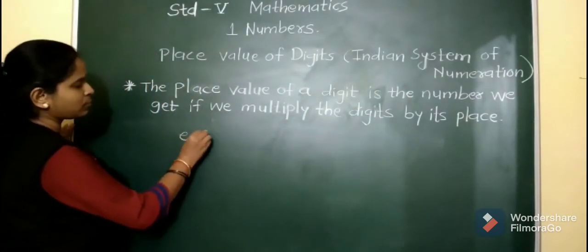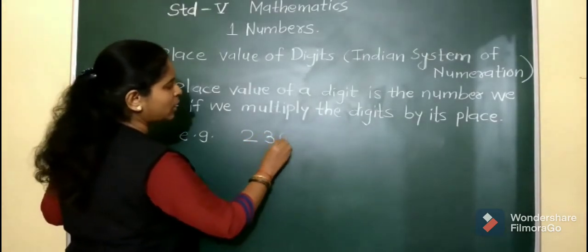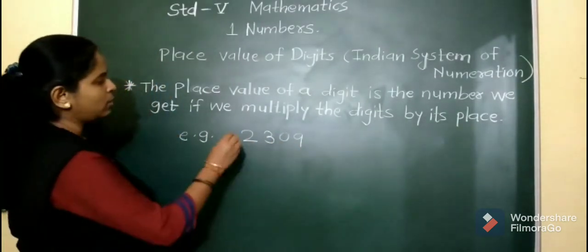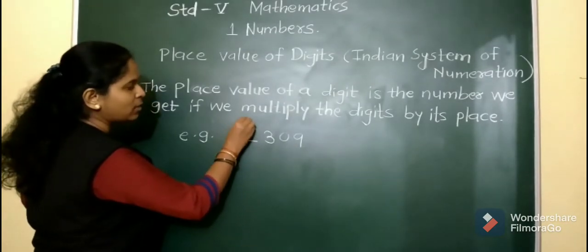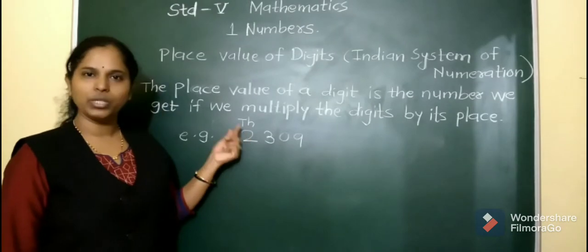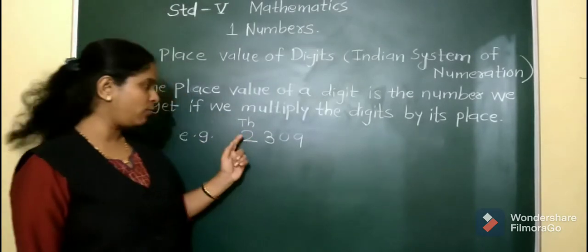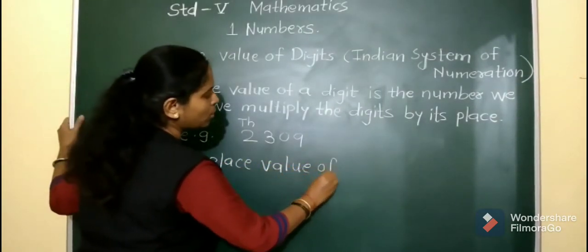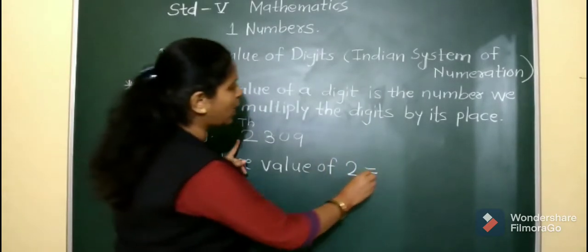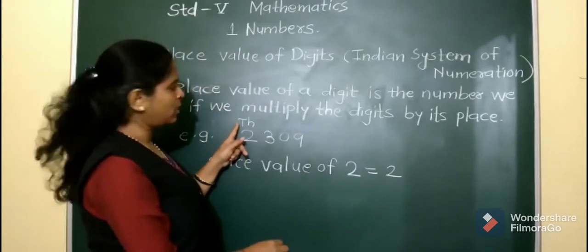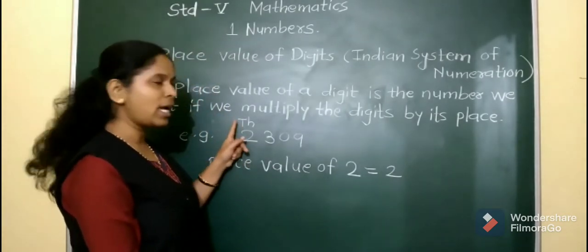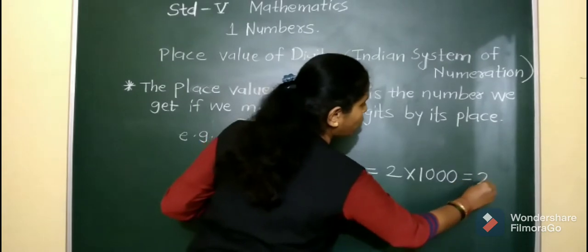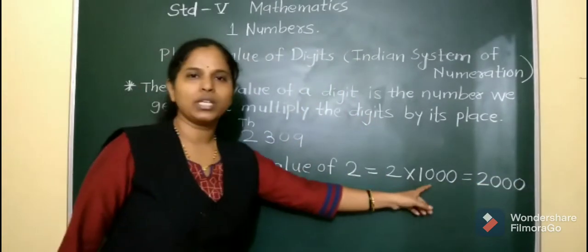For example, take 2309. In this number, digit 2 is at the thousands place. So what is the place value of 2? We will obtain it by multiplying the digit by its place. Since 2 is at thousands place, we multiply 2 by 1000, so the place value of 2 is 2000.